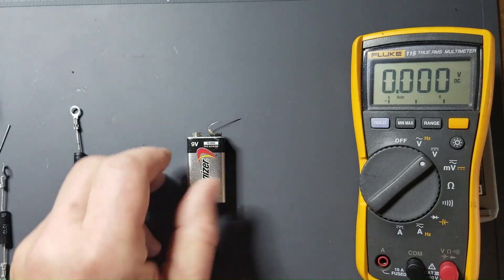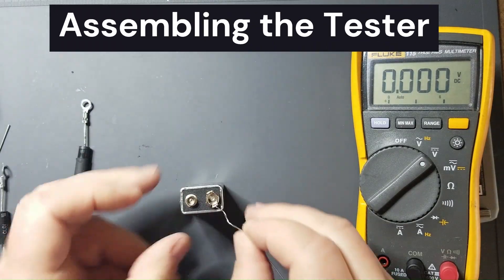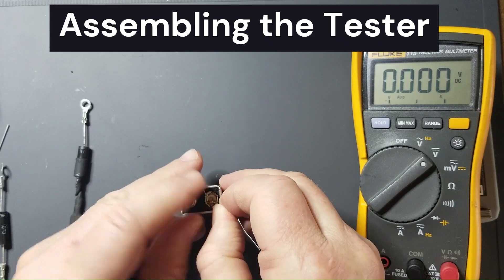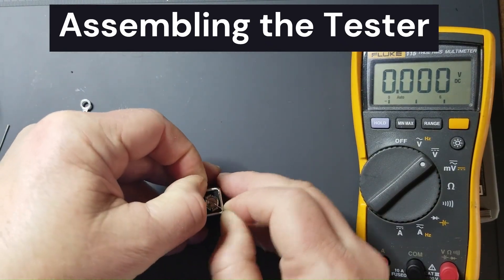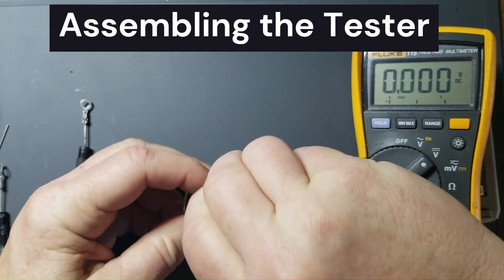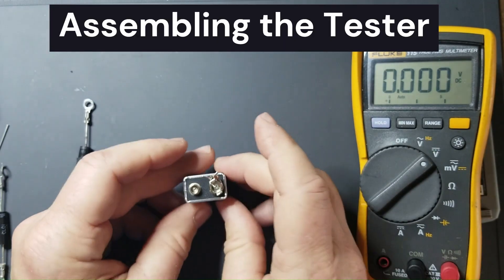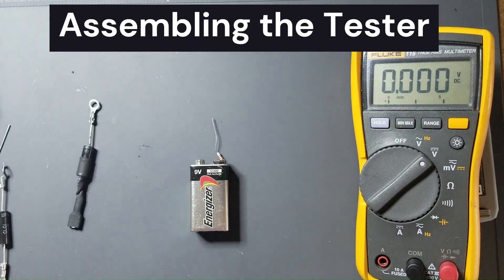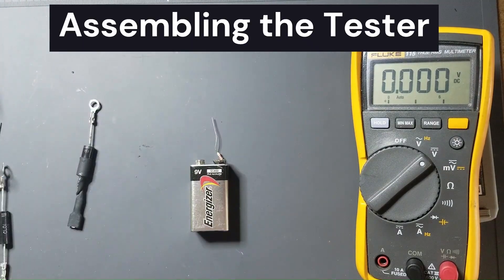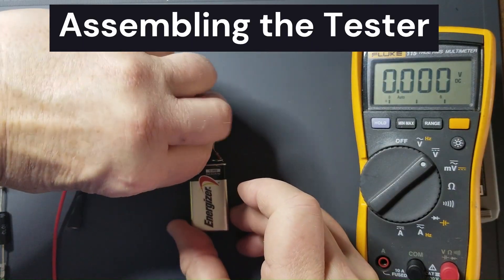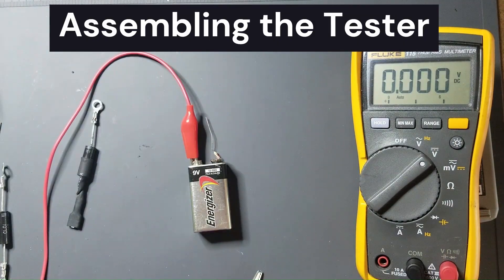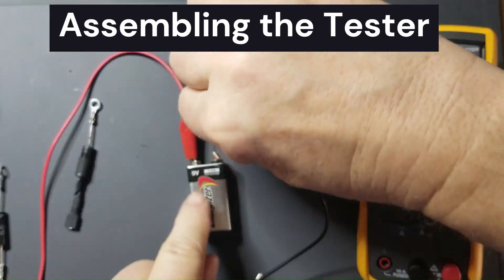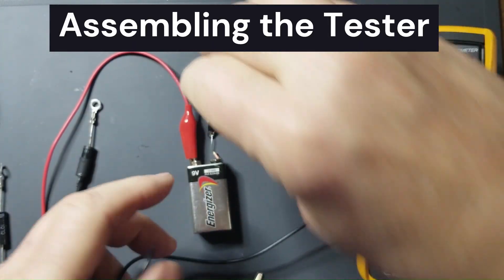We'll construct our tester like this. I expanded the negative side of the battery using a knife and I will press this resistor into it like this and wrap it around. Now this resistor is in series with the negative side of this battery. I'll then clip the red lead on the positive side of the battery and the black lead on the other end of that resistor. We now have a current limited voltage source.